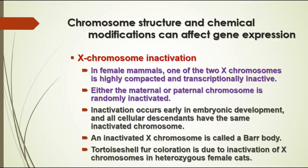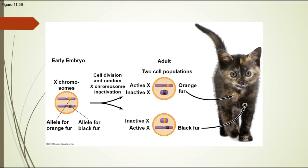The descendants of those original cells all have the same chromosome inactivated, which means there may be patches of cells with one chromosome or the other turned off, and that can affect traits showing up in the phenotype of the offspring. An example is tortoiseshell coloration in cats — the color genes are located on the X chromosomes. If one parent contributed an allele for black fur and the other for orange fur, which chromosome gets inactivated early in embryonic development determines what color fur is exhibited on the surface of the adult cat.